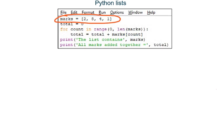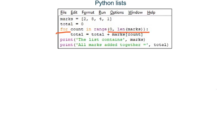This program creates a list named marks and stores four integers in it: 2, 8, 4, and 1. Line two creates a variable named total and stores the integer 0 inside it. A for loop is started in line three that repeats for the number of elements in the list — so it repeats four times. Each time around the loop it finds what is currently in variable total and what is in the element at index position count, adds these two values together, and the result is stored in variable total, replacing whatever was there before.